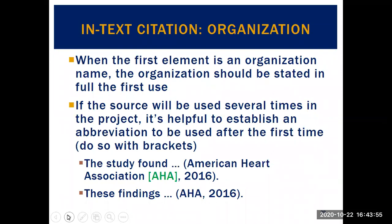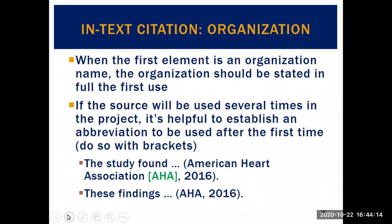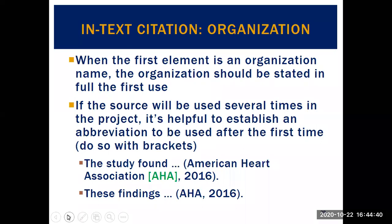When the first element is an organization, the organization's name should be stated fully the first time. If the source will be used several times, you can put an abbreviated form in brackets so you can use the short form in future citations — for example, WHO for the World Health Organization. Here's an example with the American Heart Association: the first time you use that in-text citation, spell it all out and put the acronym 'AHA' in brackets. Then in subsequent citations using the same source, your in-text citation can say just AHA.